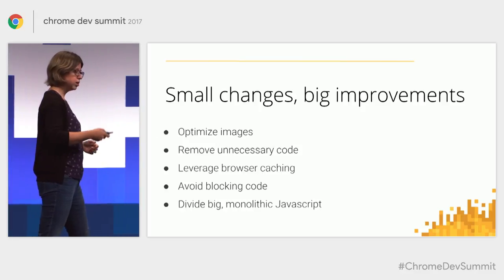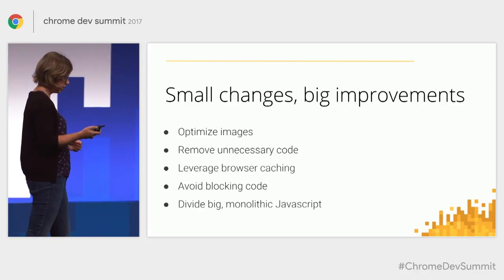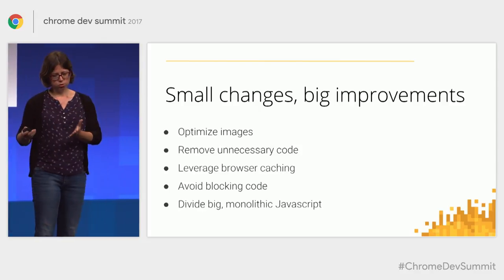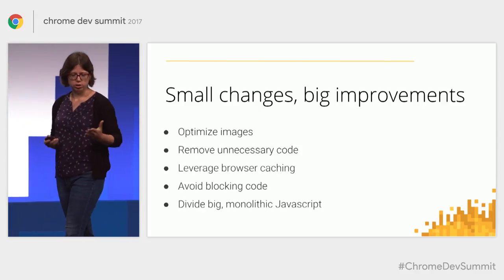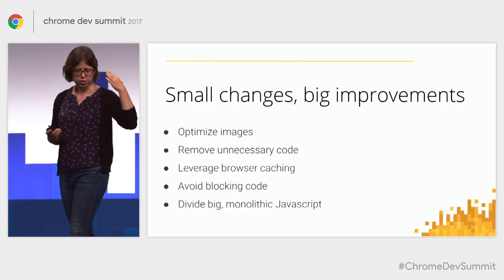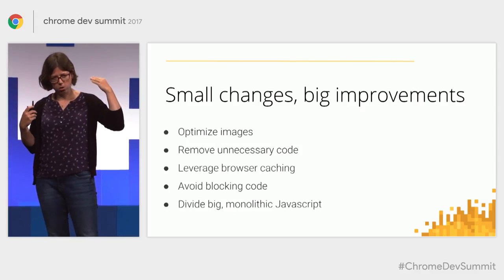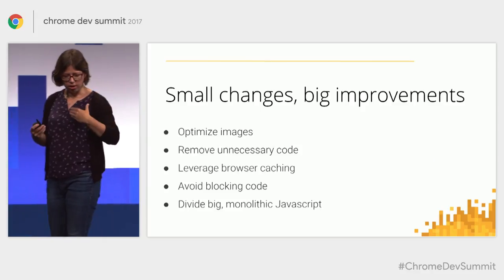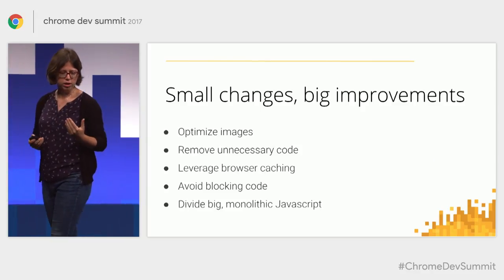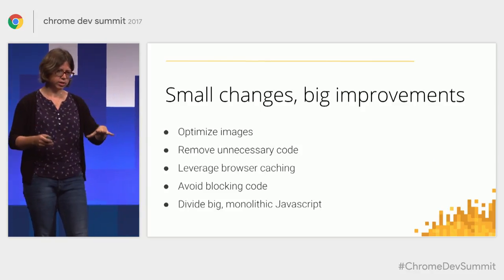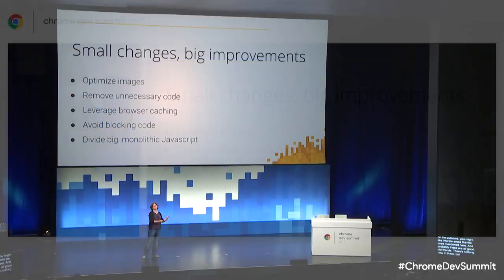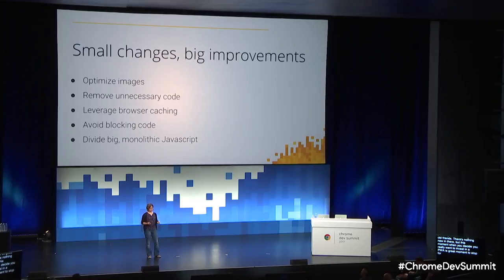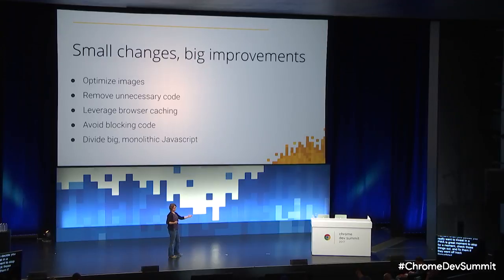I think it is worthwhile to call it out here because no amount of progressive features will solve unresponsive, cluttered, junky, or unfriendly websites. So before you add new complexity to your site, you want your site to be as lean, smooth working, and optimized as reasonably possible before you add a burden of new features. In particular, the audit you saved is really handy here. Based on your audit outcome, you might look into the areas like the ones mentioned, and this moment when you decide to invest in a PWA is a great moment to check those things out and fix them if they went off track throughout the previous life cycle of your application.